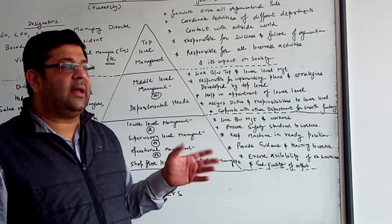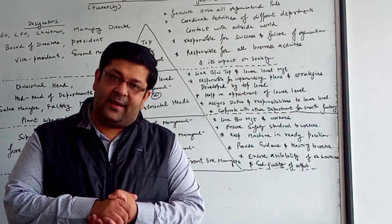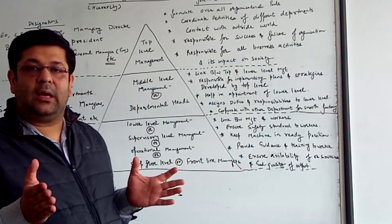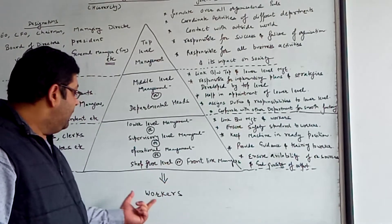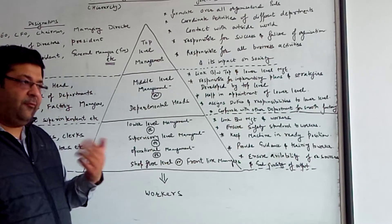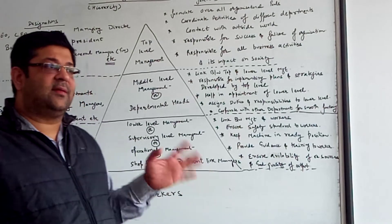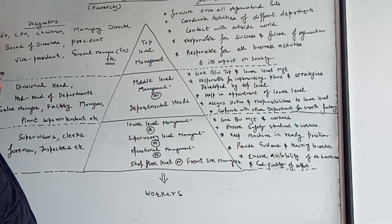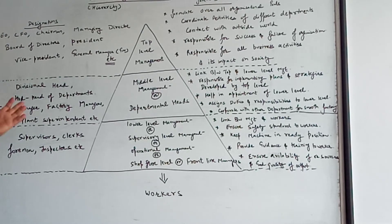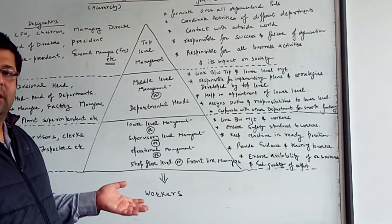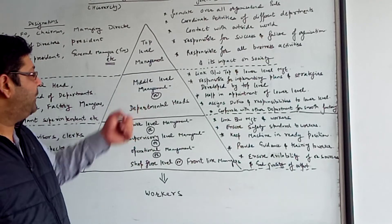A question that can appear: if your grandfather retired as a worker in a factory, at what level was he working? The answer is he was not working in management at all, because workers are not part of management. If your grandfather retired as a CEO of a company, he was working at top level management. If Mr. Shikhar retired as a sales manager from XYZ Limited, he was working at middle level management.